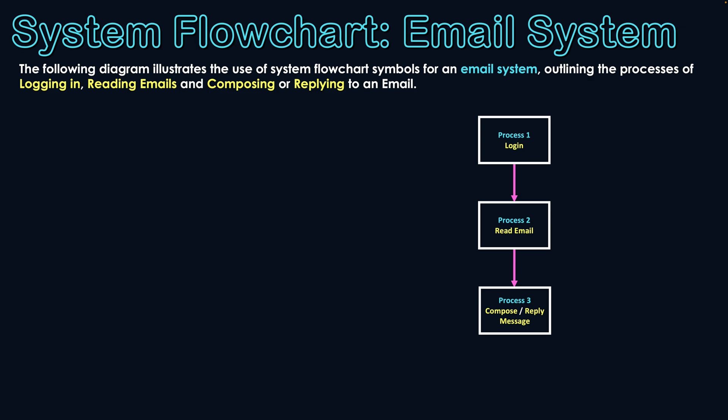You don't have to start a diagram this way, but this might be the best way to start it logically because you can already clearly see what the processes are. Now, with each process, I'm going to put the other symbols that correlate with them. So let's start with the logging in process.